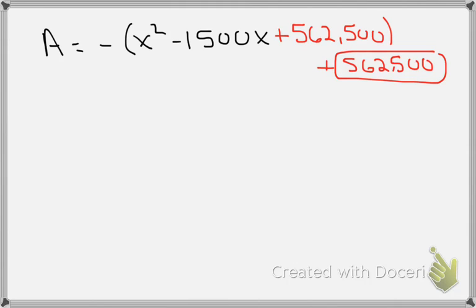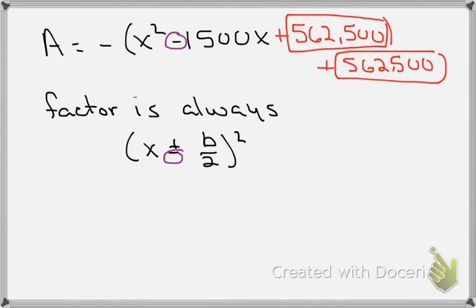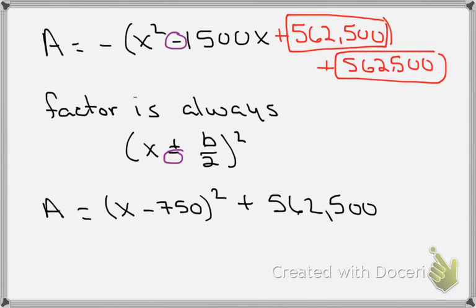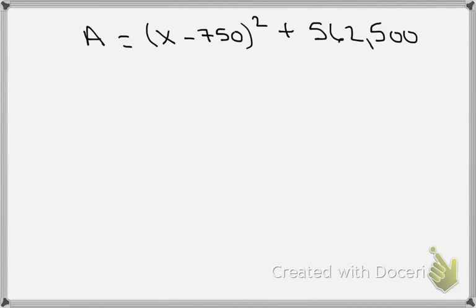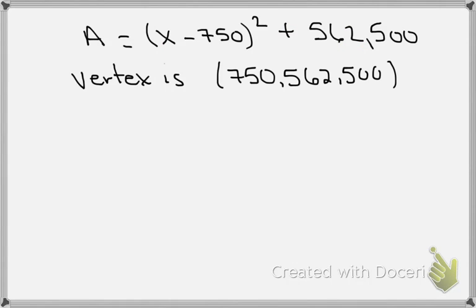Now I've completed the square and the expression inside the parentheses is a perfect square. The factored form in the parentheses is always x plus or minus b over 2, all squared. In this case it's minus because the sign in the area formula is a minus, so they match. The area equals negative 1 times (x minus 750) squared plus 562,500, and I can read the vertex directly: (750, 562,500).